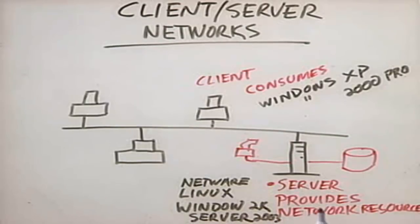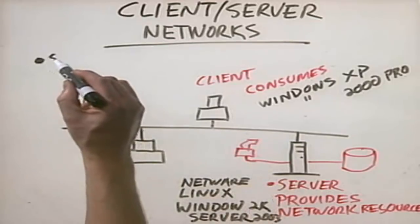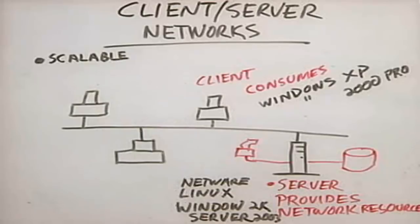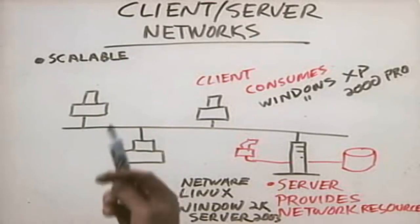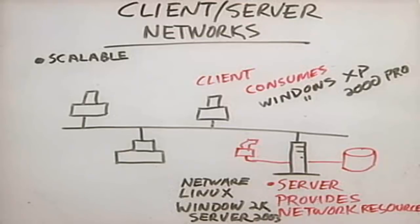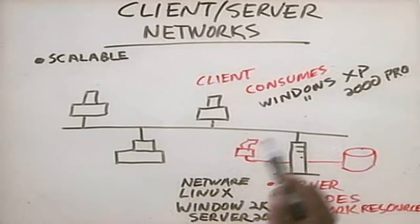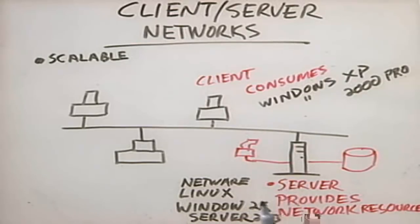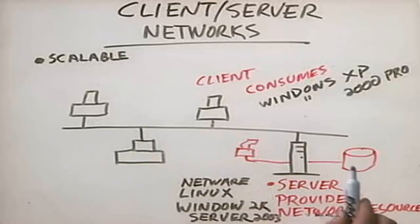These operating systems are designed to provide network resources. The benefits of this type of network include, first of all, that it's very highly scalable — it's very easy to expand the size of the network, add more clients, and add more servers. Client-server networks are also much easier to support because services are centralized. If folks are having trouble accessing files, you know where to look — it's on the server. If folks are having trouble printing, you know where to look. Backup is also a lot easier, since users save their data to storage on the server.